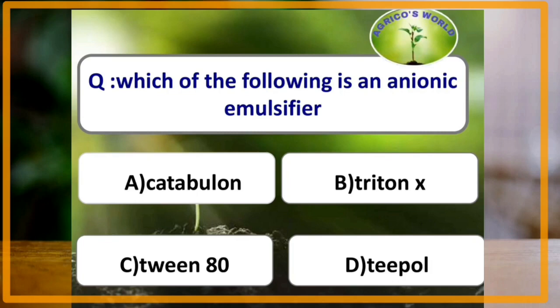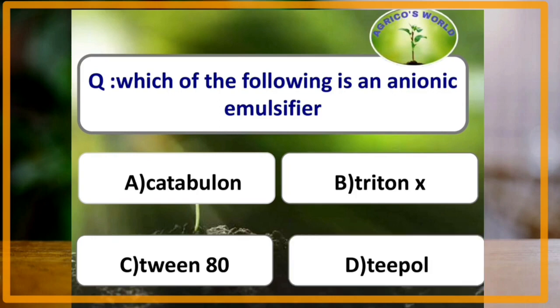Which of the following is an anionic emulsifier? The answer is Teepol. Teepol is an anionic emulsifier.